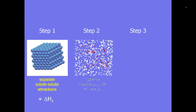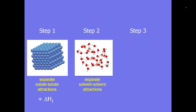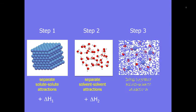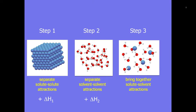Step two: spacing out the solvent by overcoming the attractive forces holding it together. Again, that is going to require energy to overcome the net of attraction already established. This step is also endothermic. Finally, step three: the interaction of the solute and solvent particles to create a solution. Generally, this step is exothermic in that any intermolecular forces are allowed to establish themselves, increasing the overall stability of the system that has been forced apart in the previous two steps.